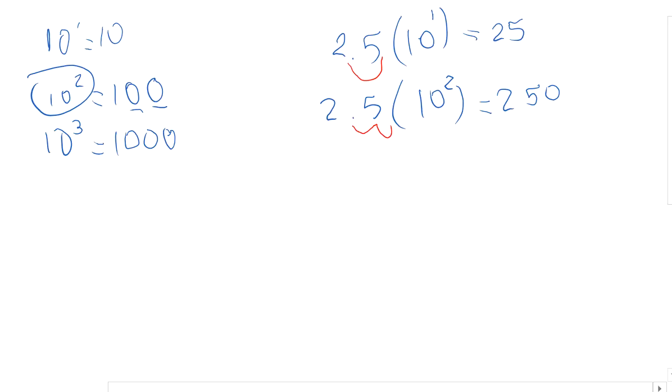For example, if we would multiply 2.5 by 10 to the third power, then we would just move this decimal point three times to the right. So this would be 2.5 here, I would move it one, two, three, and then I would just add the two zeros remaining here. So that would be the answer of that multiplication.